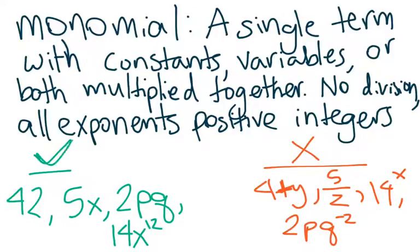Some examples of monomials are 42, that's just a constant, 5x, that's a constant times a variable, 2pq, that's a constant times two variables.